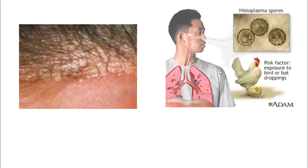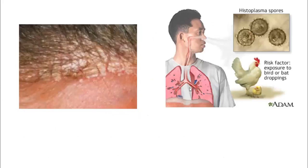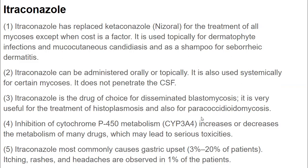Histoplasma spores represent a fungal infection you can encounter when exposed to droppings of bats or birds - if you inhale them, they can infect you. Paracoccidioidomycosis is also a fungal infection present in the southern USA region; especially farmers working there usually develop this fungal infection.